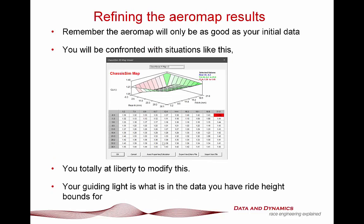Now, refining the aero map results. Here's the thing about an aero map: you're only going to be as good as the data you have modelled. So if you've got a narrow band of front and rear ride height, you're not going to have a lot of confidence interpolating that map out. What we've got here is that within the model data it's actually quite good, but as we go to the extremes — and I've exaggerated this a little bit — you can see it doesn't exactly correlate with the rest of the map; they're actually a lot higher. That's just the nature of the fact that out at the extremes we don't have any data, so we're guessing.